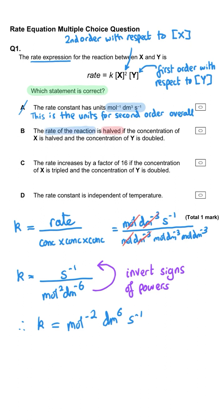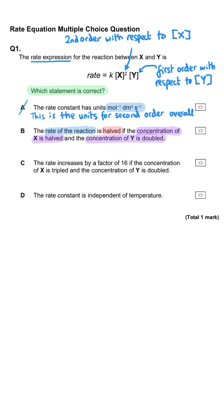B, the rate of the reaction is halved if the concentration of X is halved and the concentration of Y is doubled.